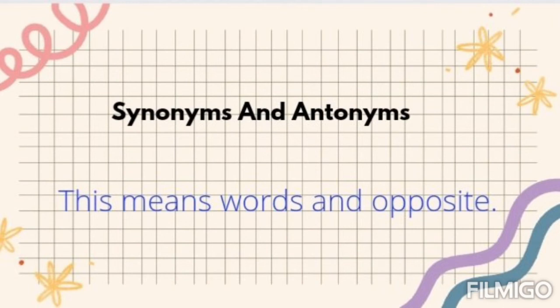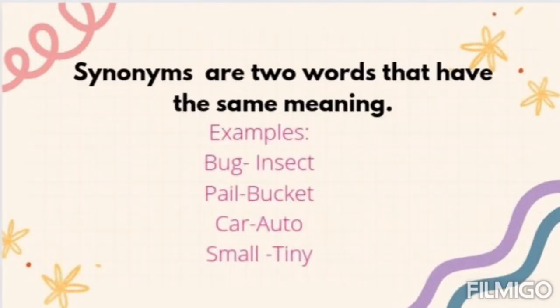Now let's move over to synonyms and antonyms. Synonyms are two words that have the same meaning. Examples: bug and insect, pill and bucket, car and auto, small and tiny. All of these are synonyms. Good job.